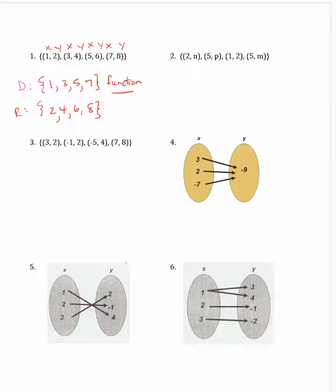Question 2 is a relation. It's the set of ordered pairs (2, n), (5, p), (1, 2), and (5, m). So the domain is the set of the values 2, 5, 1, 5. But we need to put this in order and make sure we're not repeating any values. So the domain is 1, 2, and 5 only.